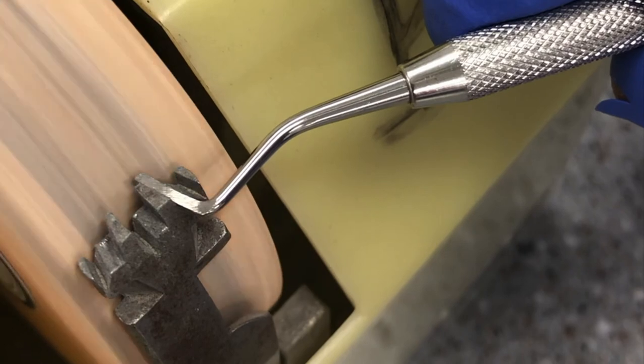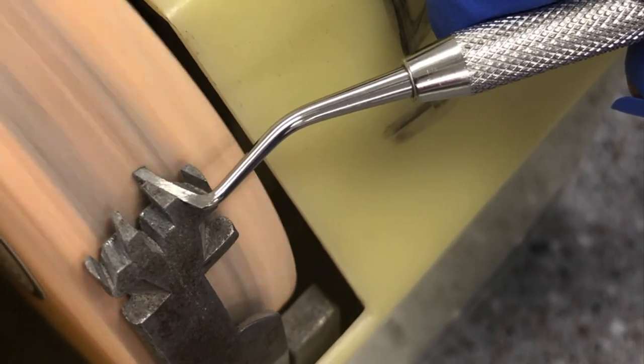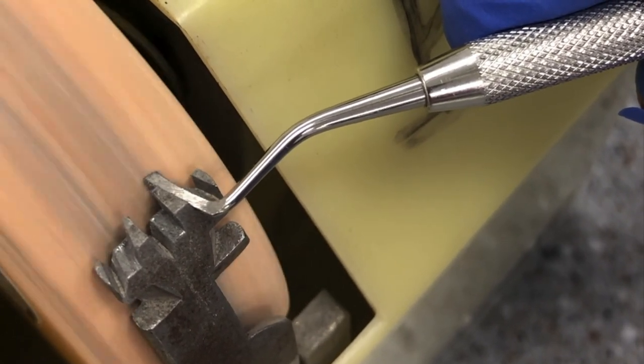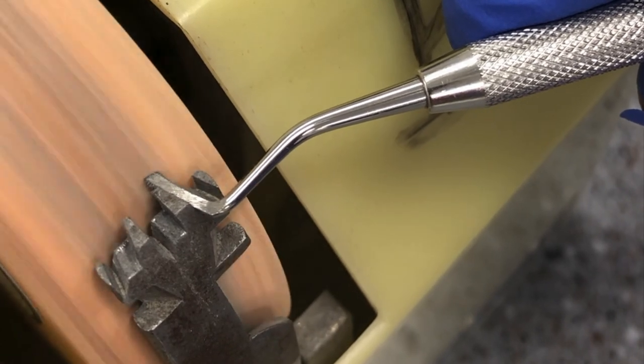With the machine on, position your blade within the guide and gently push it against the wheel. The wheel will move back and forth to ensure even wear on the grinding stone.